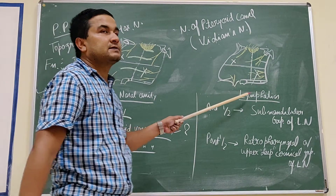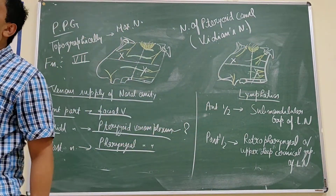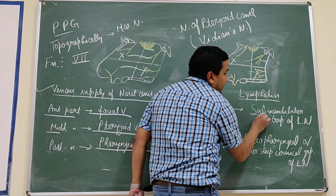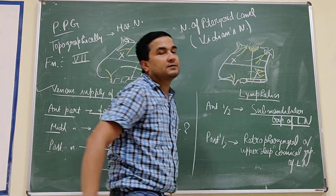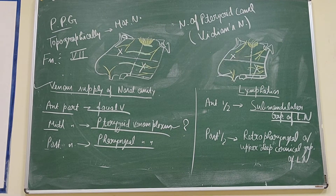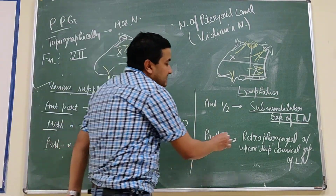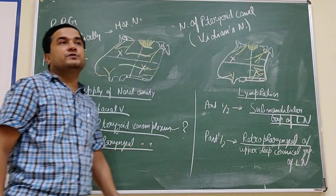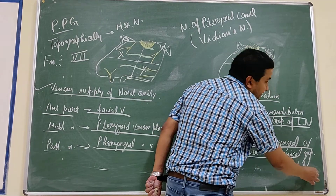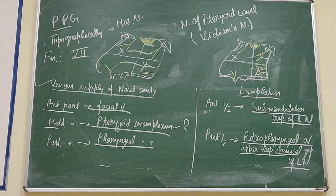Now the lymphatics. The lymphatics from the anterior half of the nasal cavity drain into the submandibular group of lymph nodes, which are embedded in the submandibular gland. While the posterior half drains into the retropharyngeal group of lymph nodes, or the upper deep cervical group — that is the jugulodigastric group of lymph nodes.